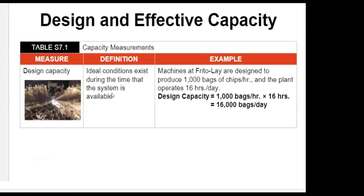Let's look at an example with Frito-Lay. Machines at Frito-Lay are designed to produce 1,000 bags of chips per hour, and the plant operates 16 hours per day. So every hour we produce 1,000 bags, for 16 hours. On the design side, we expect 16,000 bags per day.